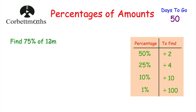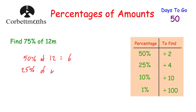The next question says: find 75% of 12 metres. There are a few different ways to do this. I'm going to find 50% and 25% and add them together, since that equals 75%. So 50% of 12: half it, that's 6. Then 25% of 12: divide by 4 — half of 12 is 6, and half again is 3. So 50% of 12 is 6 and 25% of 12 is 3. Adding them: 6 plus 3 equals 9 metres.